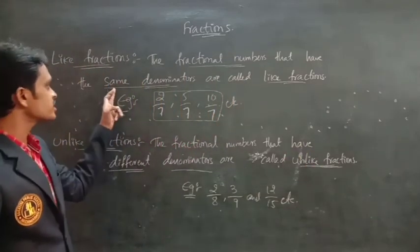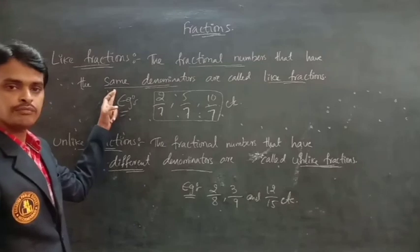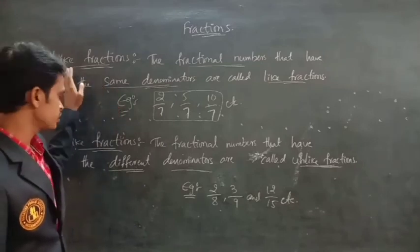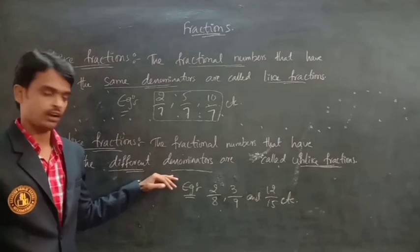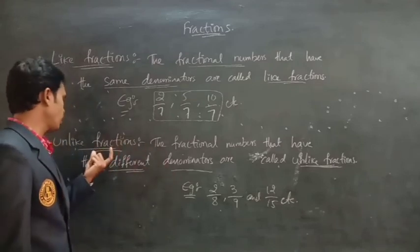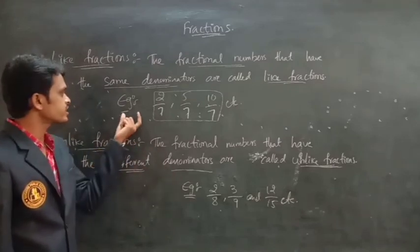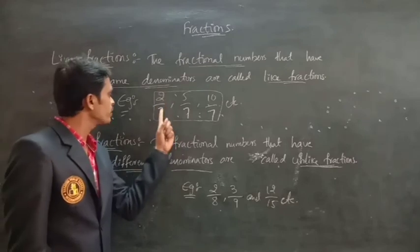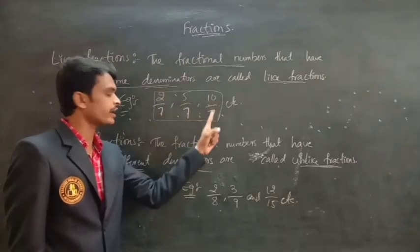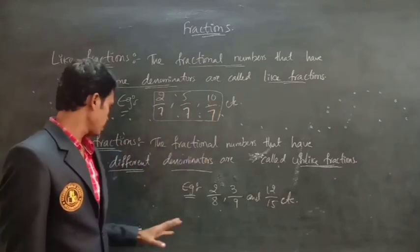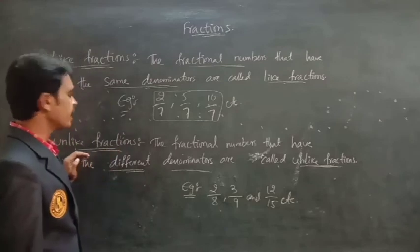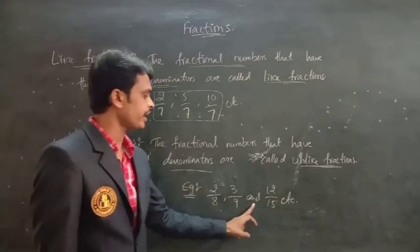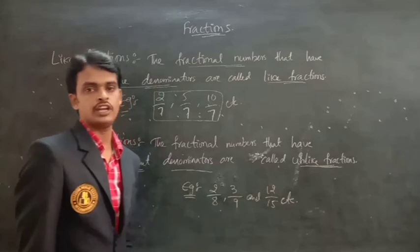So, if the denominators are same, they are called like fractions. If the denominators are different, they are called unlike fractions. The examples of like fractions are 2 by 7, 5 by 7, and 10 by 7. The examples of unlike fractions are 2 by 8, 3 by 9, and 12 by 15.